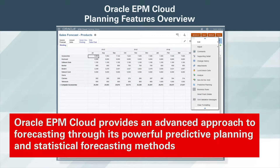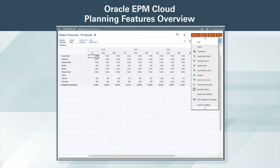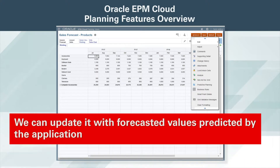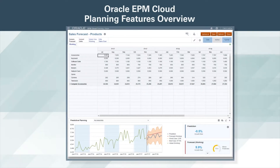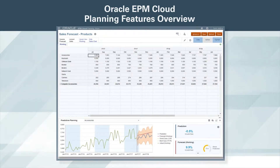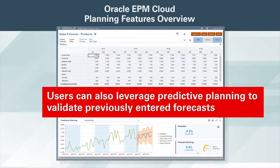Oracle EPM Cloud provides an advanced approach to forecasting through its powerful predictive planning and statistical forecasting methods. Here is a planning form that depicts the current working forecast. We can update it with forecasted values predicted by the application. The prediction is based on trends contained in historical data. Predictive planning uses sophisticated time series forecasting techniques to predict performance based on historical data. Users can also leverage predictive planning to validate previously entered forecasts.